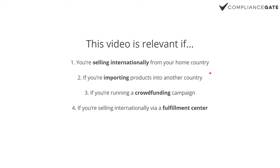For many product categories, you need to set up some sort of entity — a shell company — to import goods into the country and comply with various regulations. That's number two. Number three: if you're running a crowdfunding campaign — meaning you raise funds through Kickstarter or Indiegogo and suddenly have backers from 25 different countries — you need to know how to deal with compliance in that case. Number four: if you're selling from a fulfillment center, which we see a lot here in Hong Kong — small businesses selling worldwide cross-border using a fulfillment center, for example Easyship — you also have to deal with compliance issues in many different countries.